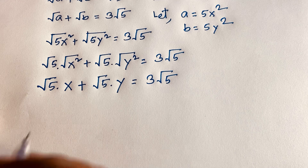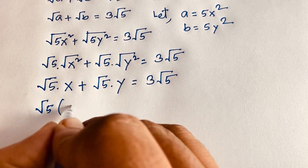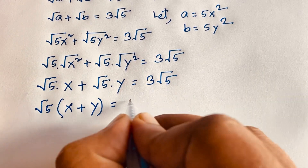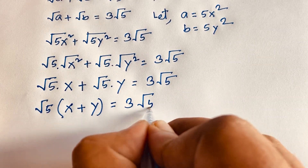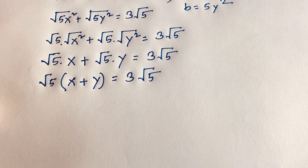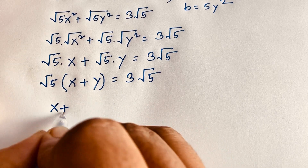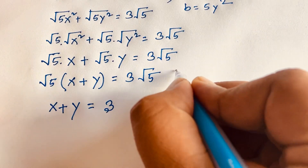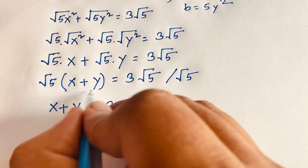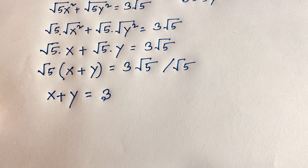Square root 5 is common on the left side. Dividing both sides by square root 5, we get x plus y equals 3. The square root 5 cancels on both sides, giving us x plus y equals 3.